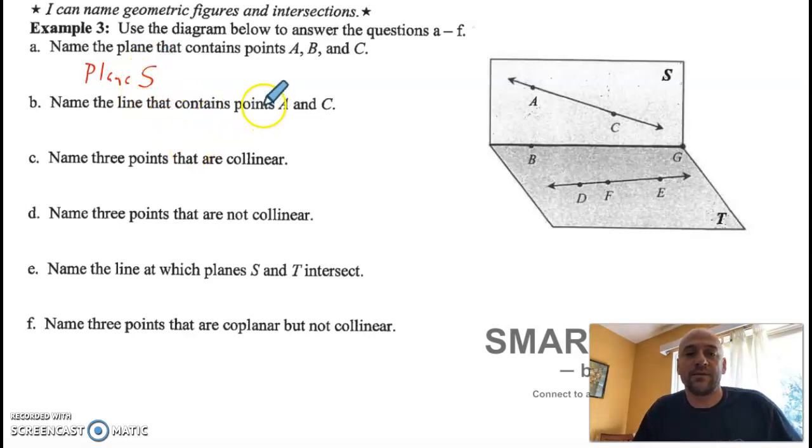Name the line that contains points A and C. There's no other name. You can just do A, C, but it's a line, double arrows.